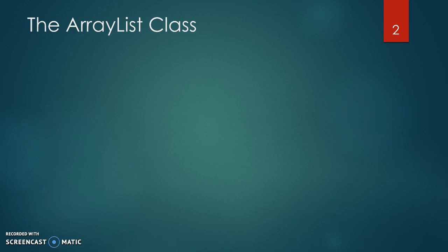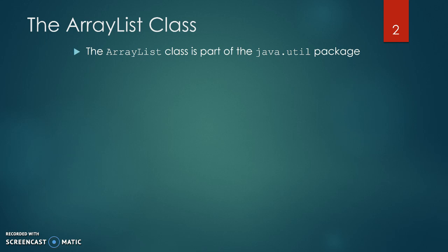An ArrayList is an object of the ArrayList class. Therefore, to create an ArrayList, you need to use the keyword new along with the constructor from the ArrayList class. You also need to know the data type of the objects that will be stored in the list. The ArrayList class is a part of the java.util package and it must be imported.